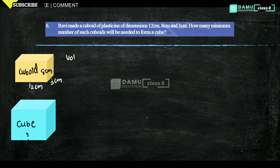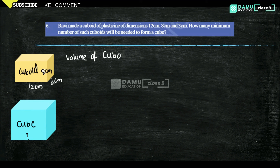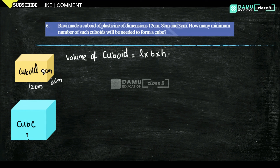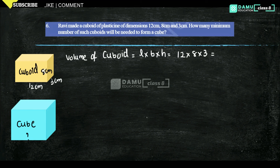Volume of cuboid will be equal to length into breadth into height, that will be 12 into 8 into 3, which gives us 288 cm³.